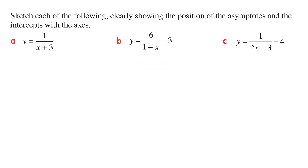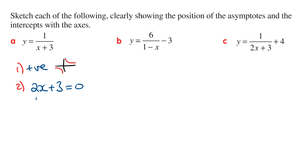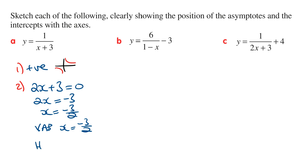Part C: y equals 1 on 2x plus 3, plus 4. The first thing again is to determine whether this is positive or negative. This is going to be a positive hyperbola, so the graph is going to be in the first and third quadrant. For the vertical asymptote, we let the denominator 2x plus 3 equal 0 and solve for x. So 2x is going to be minus 3, giving x is equal to minus 3 on 2. The vertical asymptote is the line x is equal to minus 3 on 2. The horizontal asymptote is just the constant, so the line y is equal to 4.